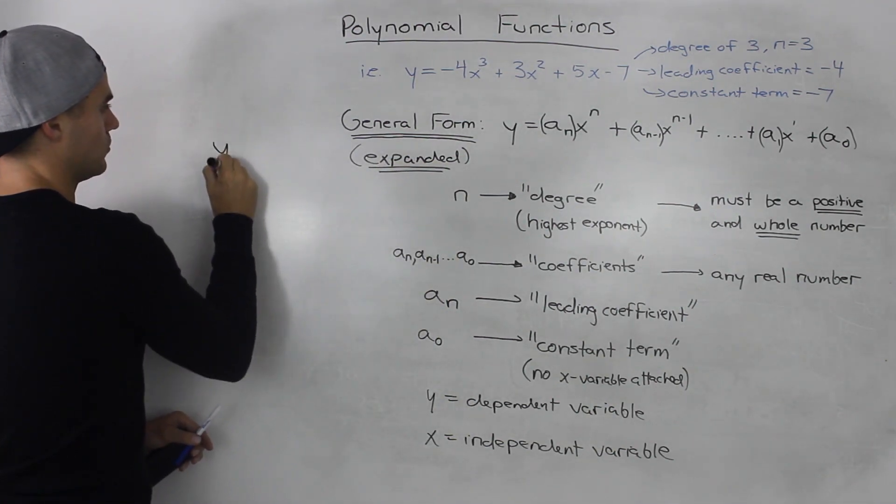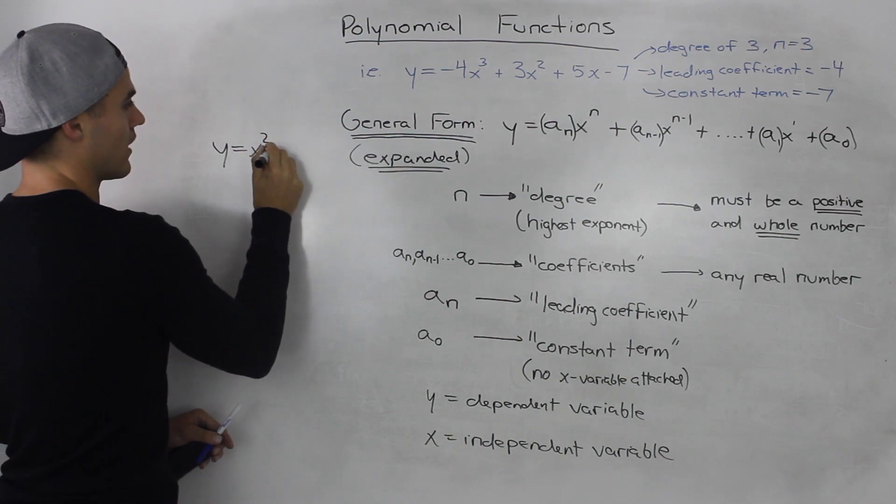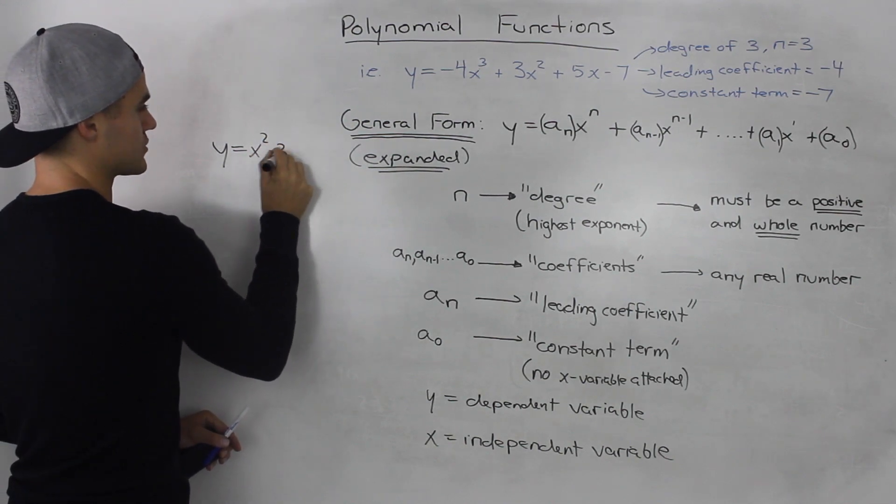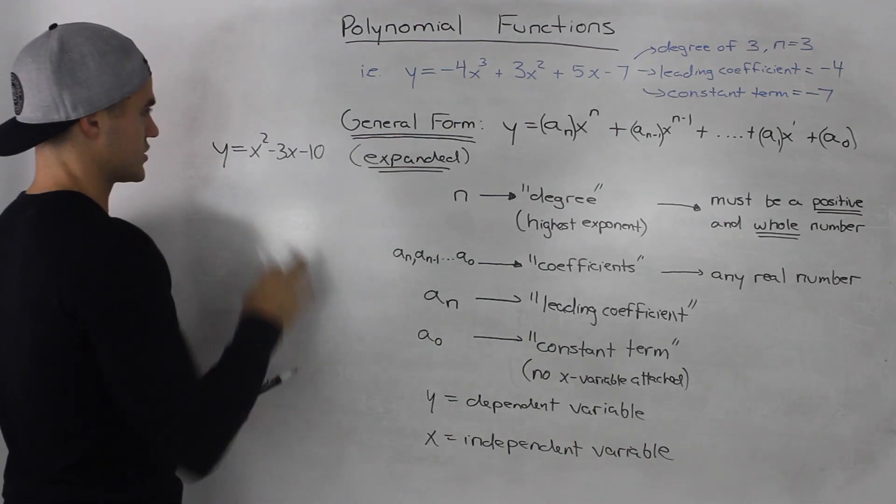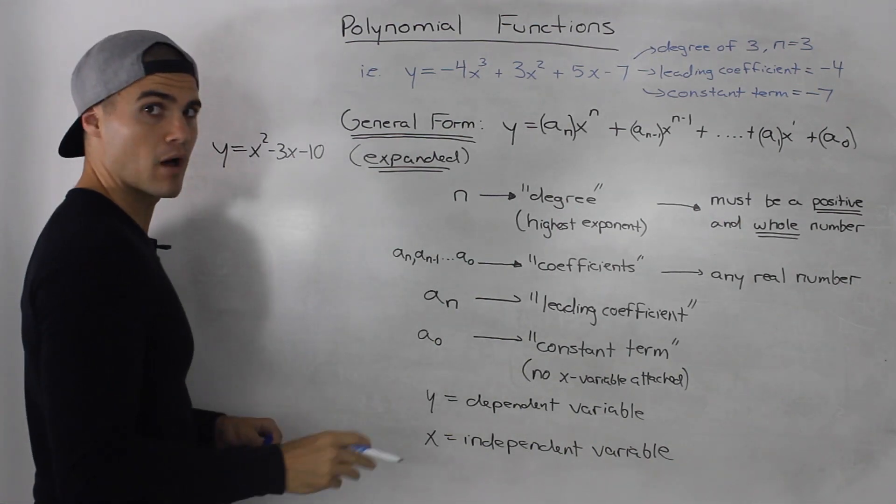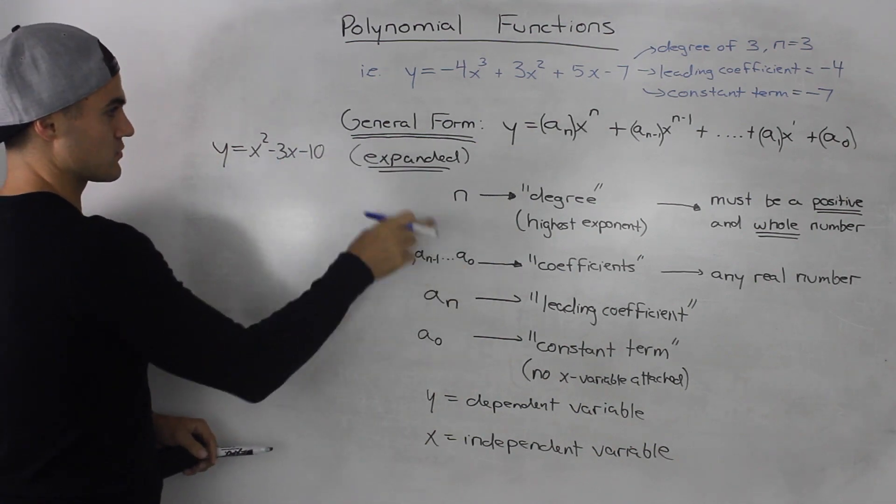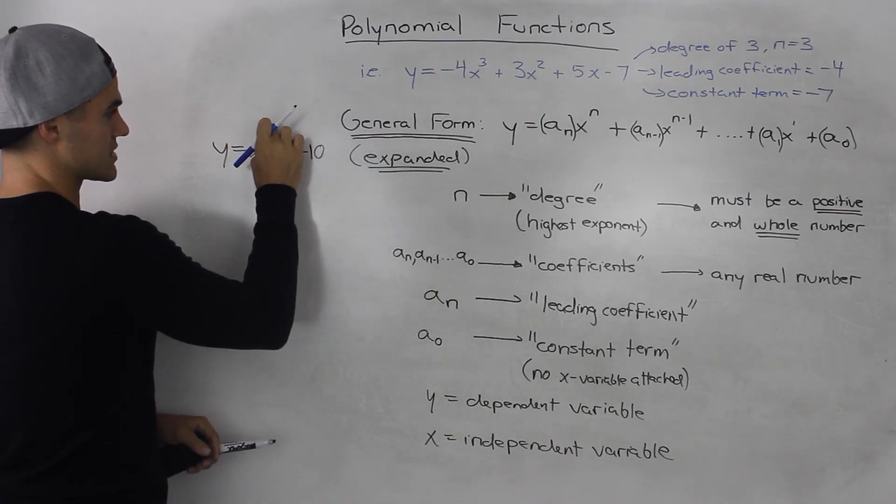...let's say you have a polynomial function y equals x squared, let's say, minus 3x minus 10. Right? So this is just a quadratic, which is a type of polynomial function. So just as a review, the degree is 2, the highest exponent.